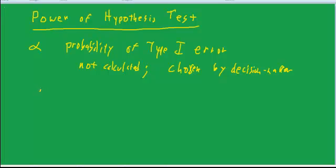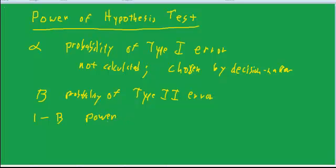Okay, and then we can define beta as the probability of a type 2 error. And I'll just say that 1 minus beta is the power of the test. So power then is a good thing. More power is good.